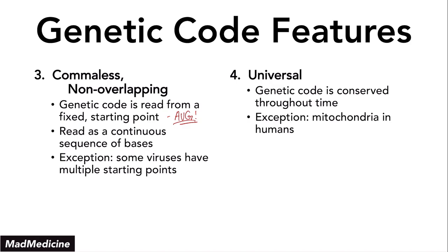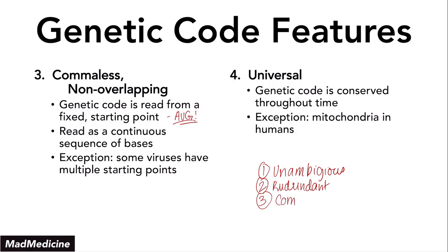So what are the four features of the genetic code? Number one, unambiguity — each specific codon will lead to one specific amino acid. Number two, redundancy — one amino acid can be coded by multiple codons. Number three, comma-less — the code is read continuously from a fixed start point. Number four, universal — what you have in terms of genetic code is essentially what everyone has, and our genes are coded by the same nitrogenous bases.